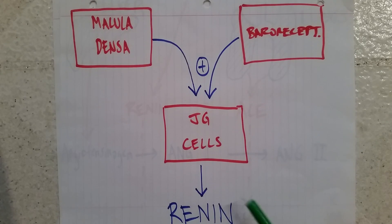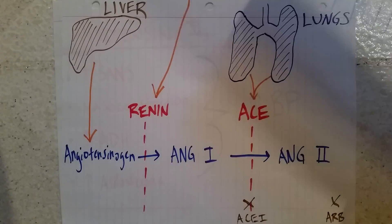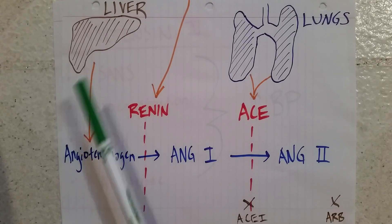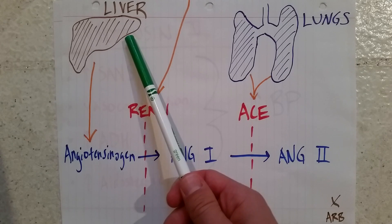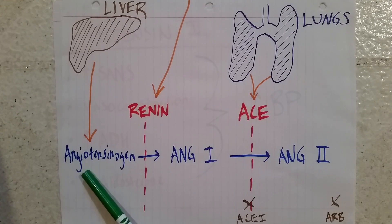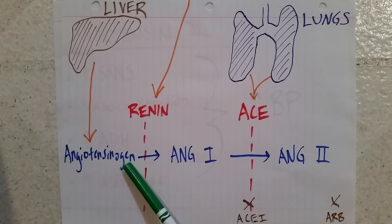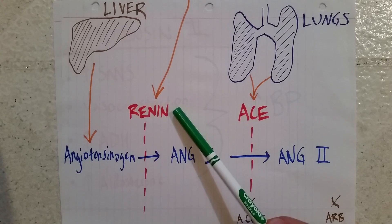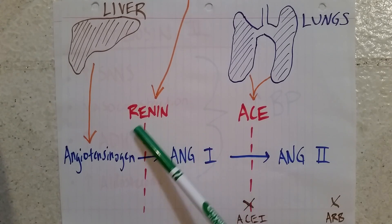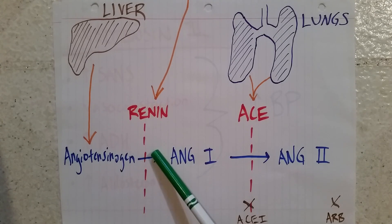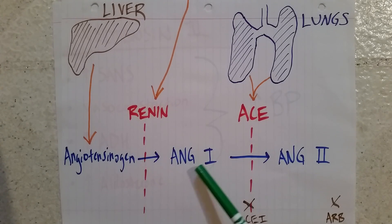Why do we care about renin? Renin is an enzyme, and enzymes catalyze chemical processes. The liver makes a proenzyme called angiotensinogen — a proprotein that by itself does nothing; it's inactivated, as the '-ogen' ending tells you. But when renin is released from the JG cells into the afferent arteriole and enters the blood supply, it mixes with angiotensinogen and catalyzes its conversion to angiotensin 1.